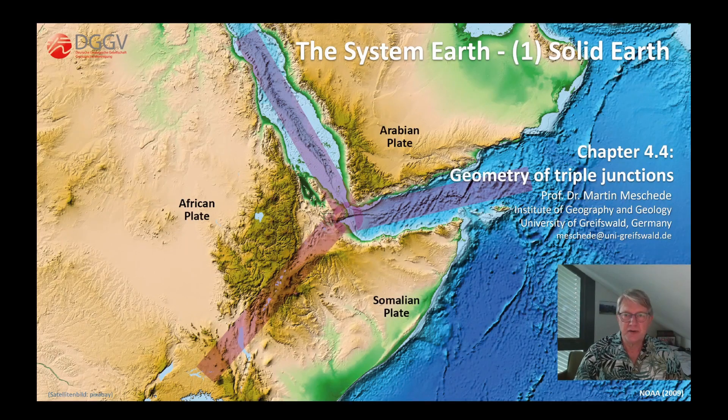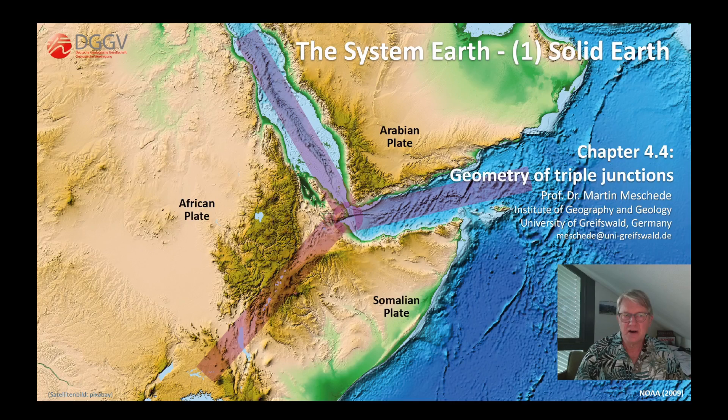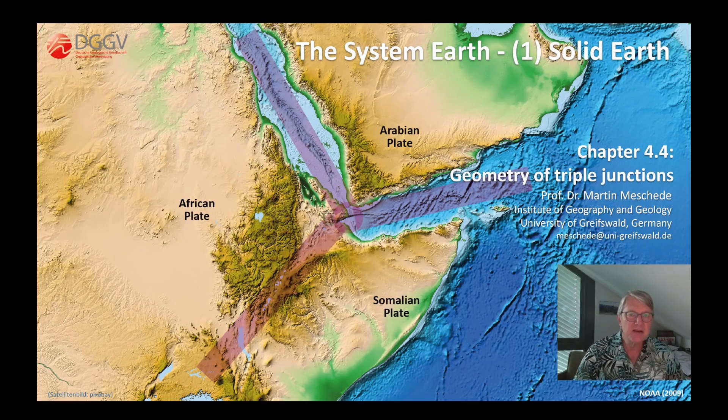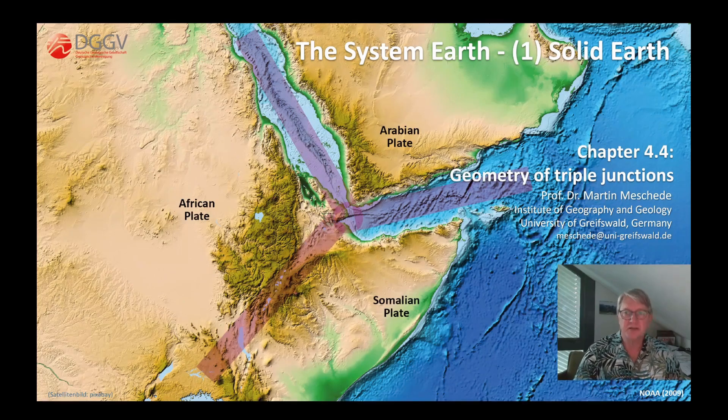I will show that the triple junctions are essentially restricted to two different types. Although there are a few more geometrically possible, the two types that I will explain in more detail are the stable variants, meaning they remain even as plate movements continue, however not necessarily stationary but in their constellation.